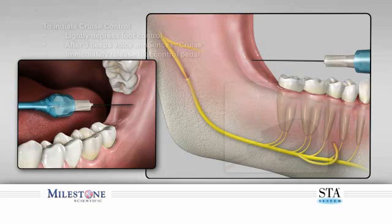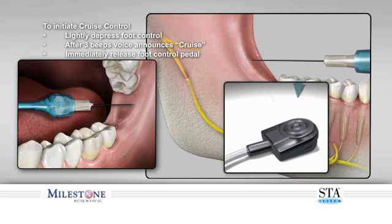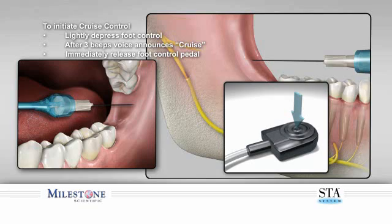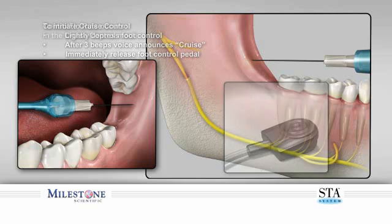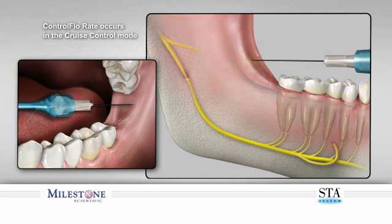To initiate the injection using cruise control, slightly depress the foot control. After three beeps, you will hear the STA system announce "cruise." Immediately release the foot control pedal to enter into the cruise control mode. This allows the control flow rate to continue to dispense anesthetic solution, creating an anesthetic zone in front of the tip of the needle.